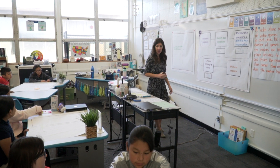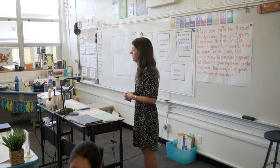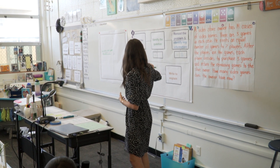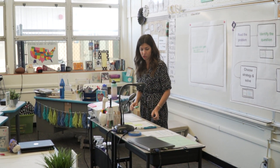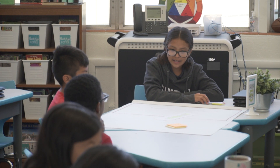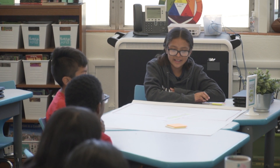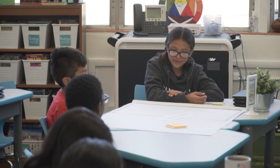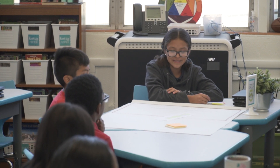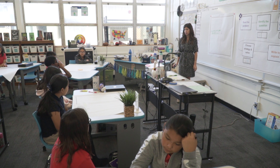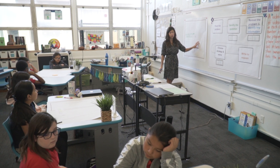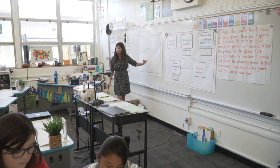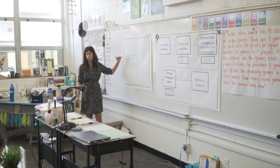So now we're going to share out what your group agreed were the key pieces for this problem. Let's start with group five — can someone share what you think? The store owner rents an equal number to seven players. And the second thing? Three games each. Did you guys highlight the three games? So I'm going to start writing down in my whole-to-part chart the parts of the problem that are going to help us solve this question.